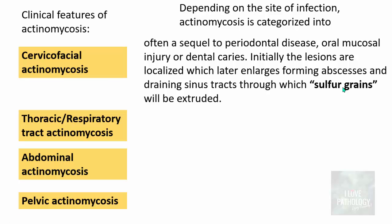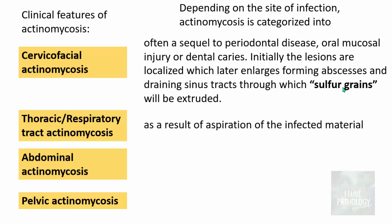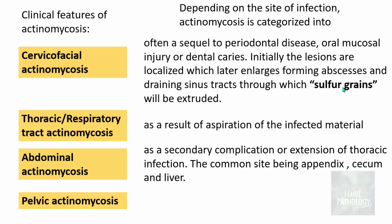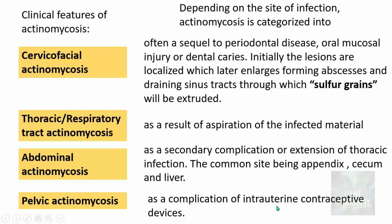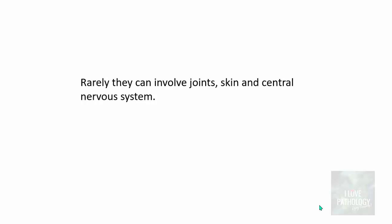Through the sinus tracts, sulphur granules are extruded. The name sulphur granules is given because they are white to yellowish in color — the color of sulphur. Thoracic or respiratory actinomycosis usually results from aspiration of infected material, whereas abdominal actinomycosis is almost always a secondary complication or extension of thoracic infection. The common sites of abdominal actinomycosis are the appendix, cecum, and liver. Pelvic actinomycosis occurs as a complication of intrauterine contraceptive devices. Rarely, actinomycosis can also involve joints, skin, and the central nervous system.